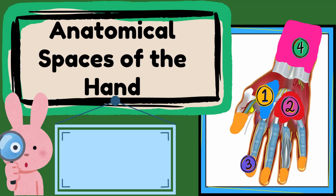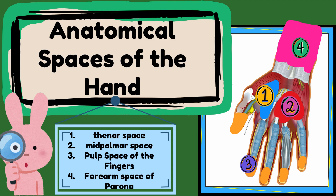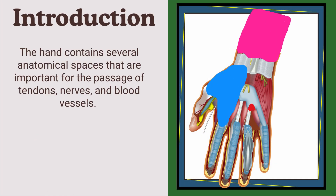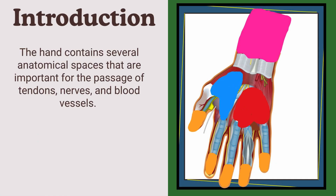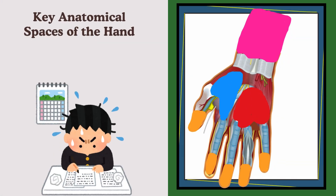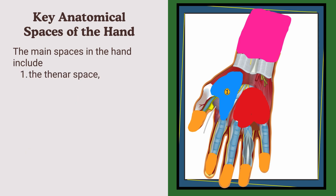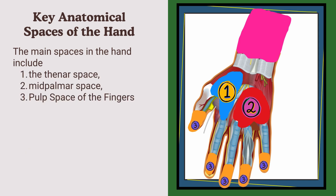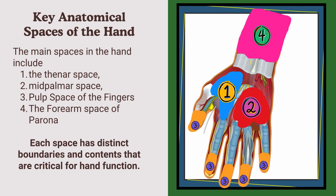In this video we will talk about the spaces of the hand anatomy. We will talk about the four important spaces in the hand. The hand contains several anatomical spaces that are important for the passage of tendons, nerves, and blood vessels. The main spaces include the thenar space, the mid-palmar space, the pulp space of the fingers, and the forearm space of Parona. Each space has distinct boundaries.